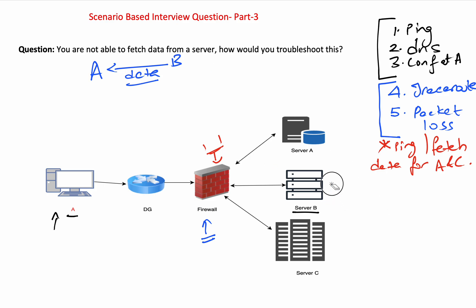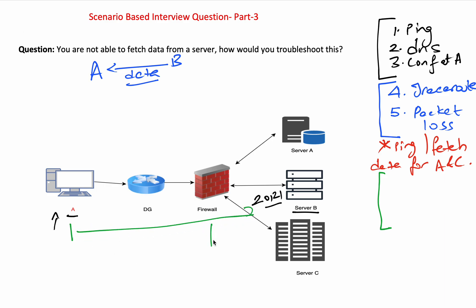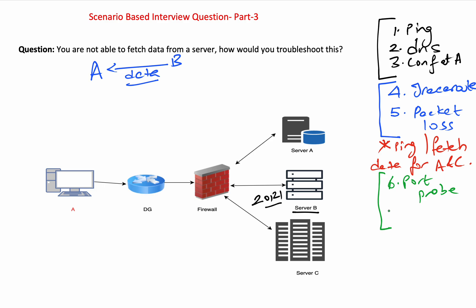Since you're trying to fetch data — for example using FTP on ports 20 or 21 — you also need to check if the port is accessible. You perform a port probe from the client to the server, and also from the firewall, just to double-check. This port probe or port connectivity check tells you if the port is open or not. Then you review the firewall rules.